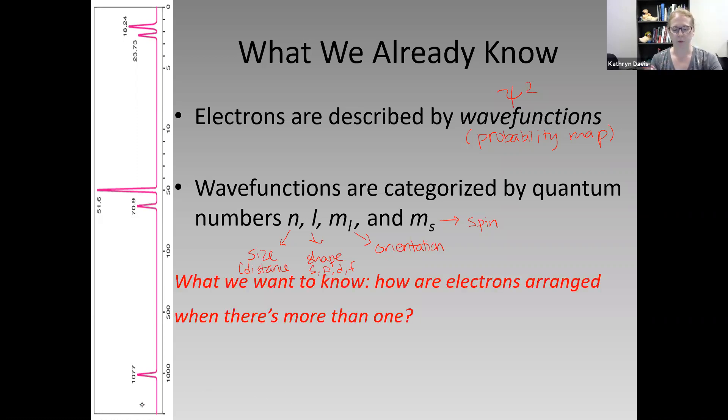Again, how are electrons arranged when there's more than one? So how do I deal with these four quantum numbers? What we need are a few more rules.